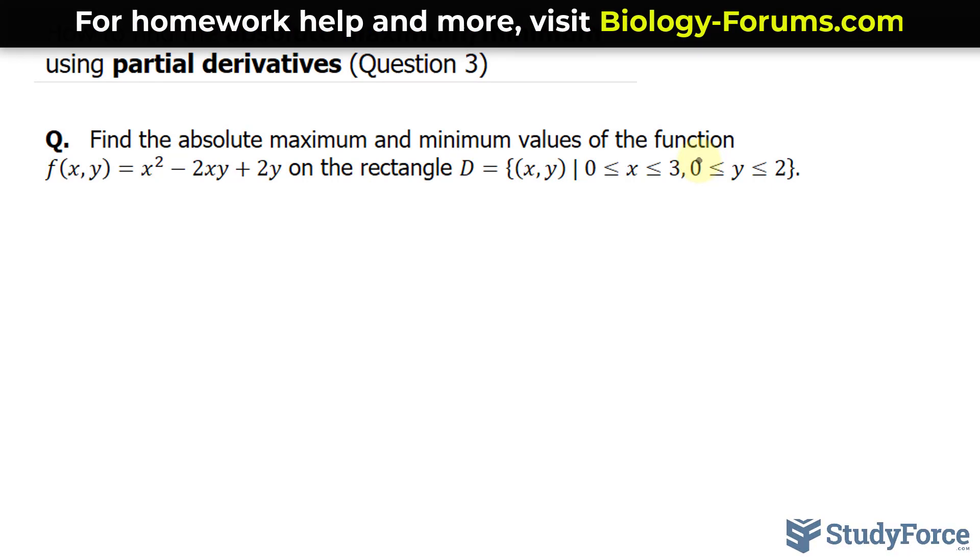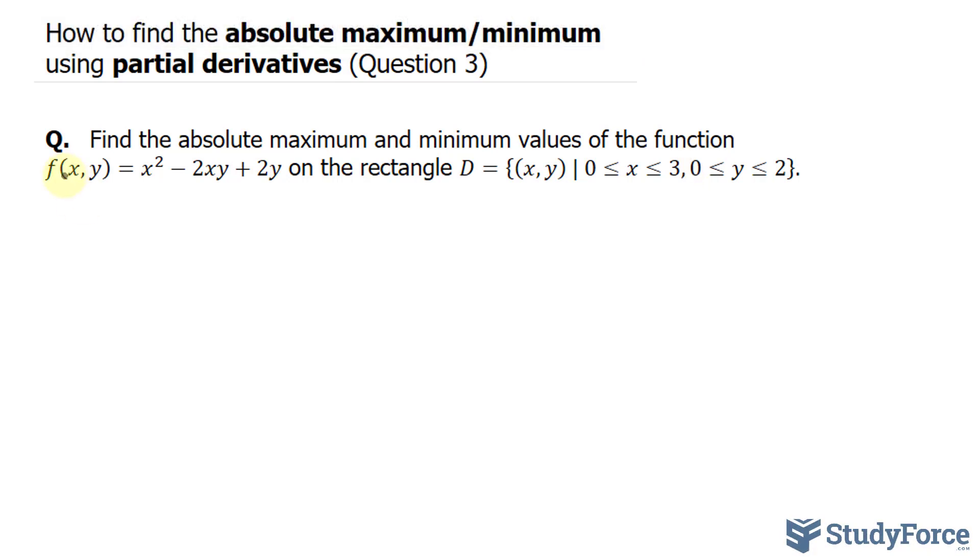What you're supposed to do from the get-go is find the partial derivative with respect to x and then the partial derivative with respect to y and subsequently solve the two equations which are a system of equations simultaneously. If you do that correctly, the only critical point you should get, which I'll represent as CP, is at 1 and 1.